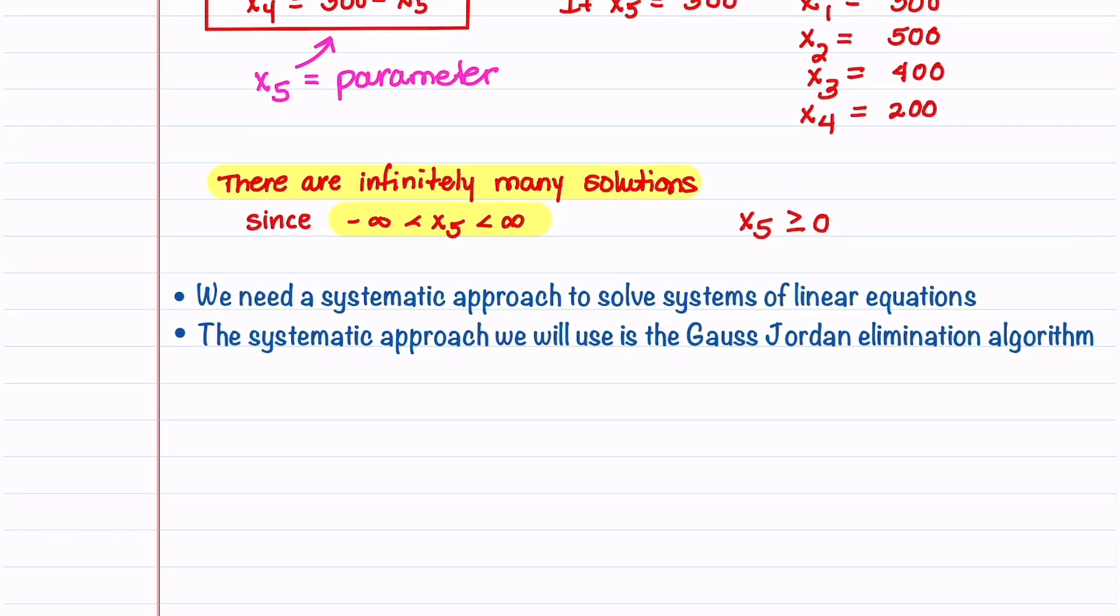As you can see from this last example, we need a systematic approach to solve systems of linear equations. The systematic approach that we're going to use in this series of videos is the Gauss-Jordan elimination algorithm. It's similar to what we just did for this example but more structured. In the next video we'll dive into more of the details and terminology.